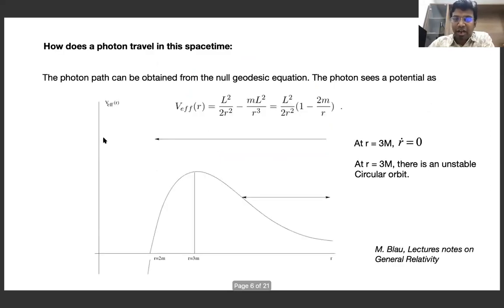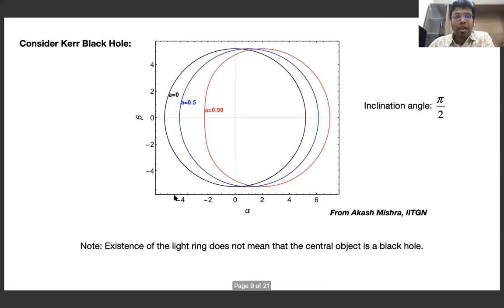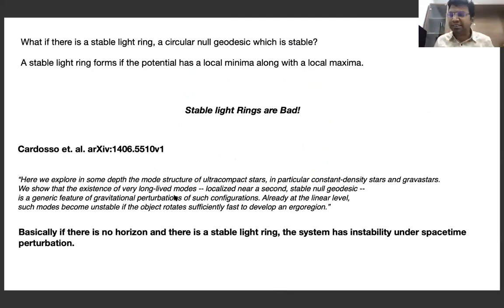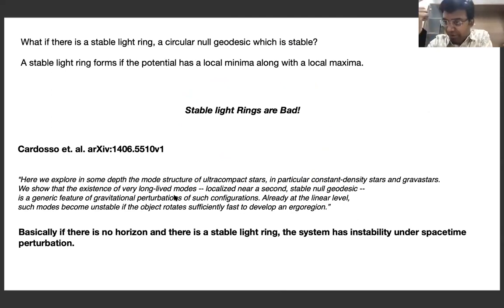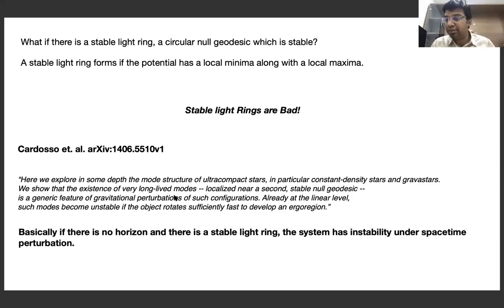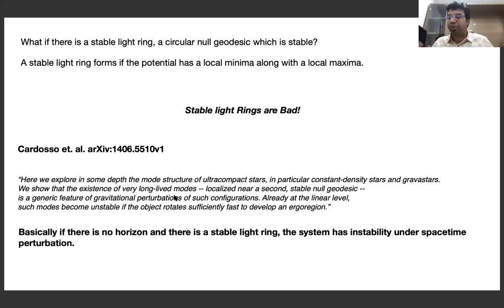Light rings come from the maximum of the potential — so they are unstable for Schwarzschild and Kerr. One can also think of a stable light ring, corresponding to a local minimum of the effective potential for the massless particle. In Schwarzschild there is no stable light ring. What Cardoso and collaborators proved is that if a system has a stable light ring, such a system will be unstable under spacetime perturbation. Unstable light rings are better; stable light rings are problematic.